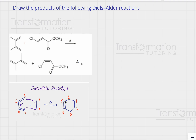We must have a conjugated diene, which means we have to have a double, single, double bond arrangement — that's our diene. And we must have a dienophile. A dienophile is any molecule that contains a double or a triple bond.